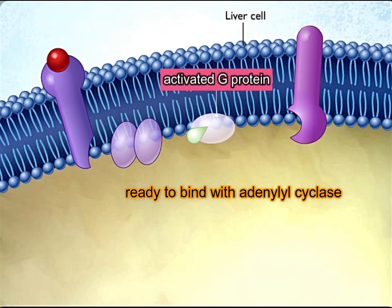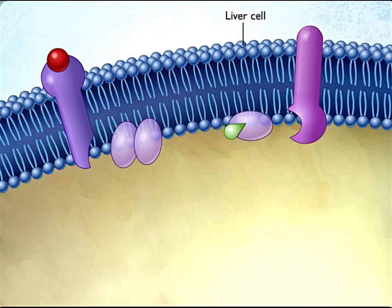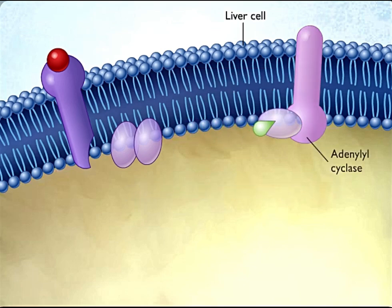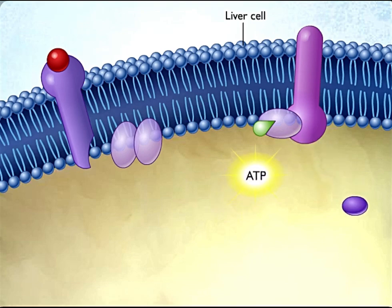The activated G protein subunit then diffuses within the plasma membrane until it encounters adenylyl cyclase, a membrane enzyme that is inactive until it interacts with the G protein subunit. When activated by the G protein subunit, adenylyl cyclase catalyzes the formation of cAMP from ATP.